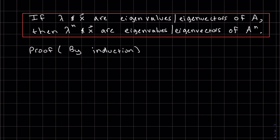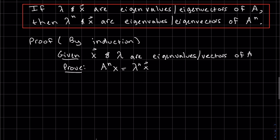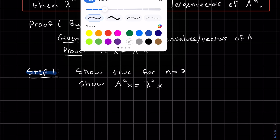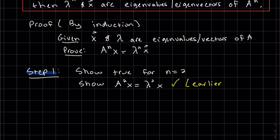Okay, so this is just an extension. If lambda and x are eigenvalues eigenvectors of A, then lambda to the n and x are eigenvalues and eigenvectors of A to the n. So here's a proof by induction. So first are given. So with proof by induction we have three steps. We're going to show it's true for the first one. We're really here for our second one. But we don't have to do this, because we did it earlier. Very nice.